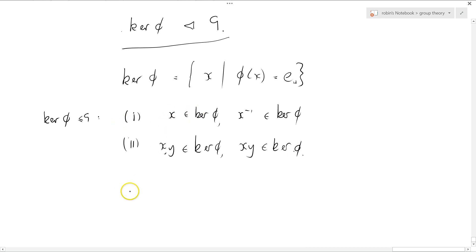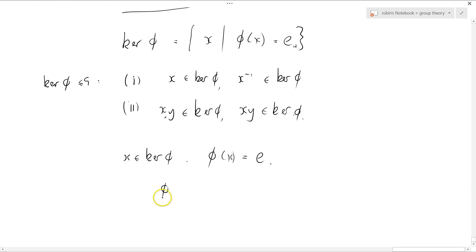Well, what does this mean? X is in the kernel of phi. By definition, that says that phi of X equals E. Okay? So we now ask what phi X phi X inverse is. Well, that, of course, equals phi of E, which equals E.